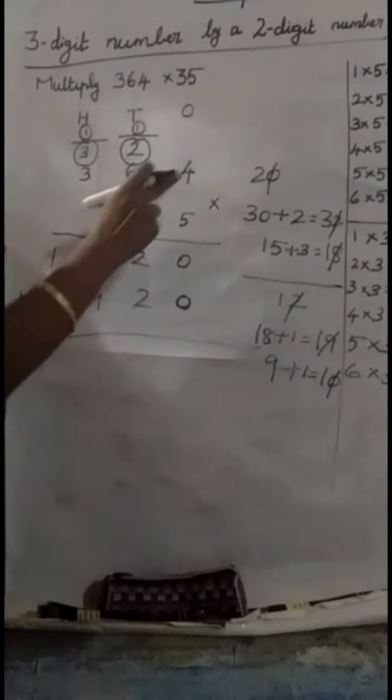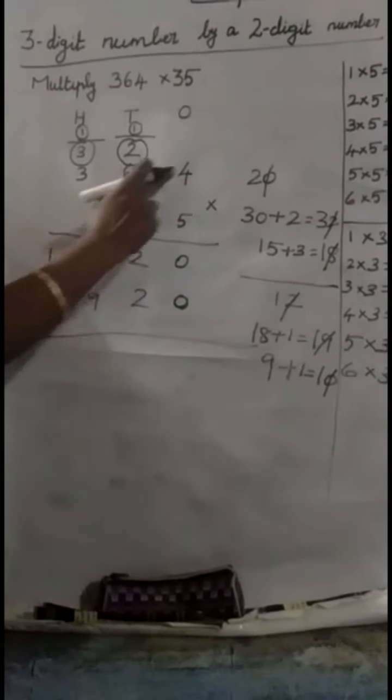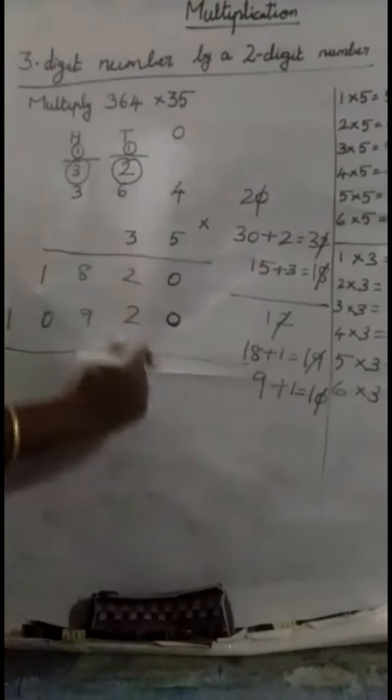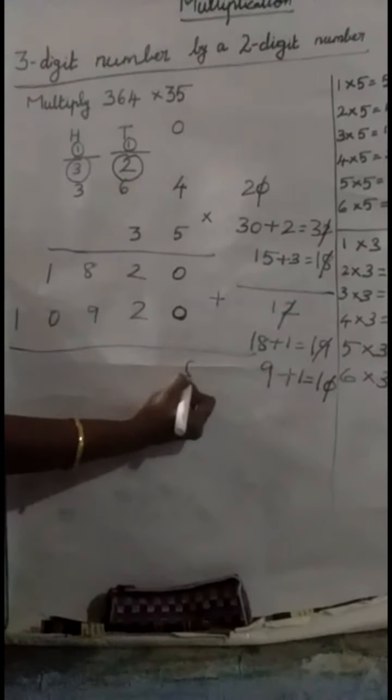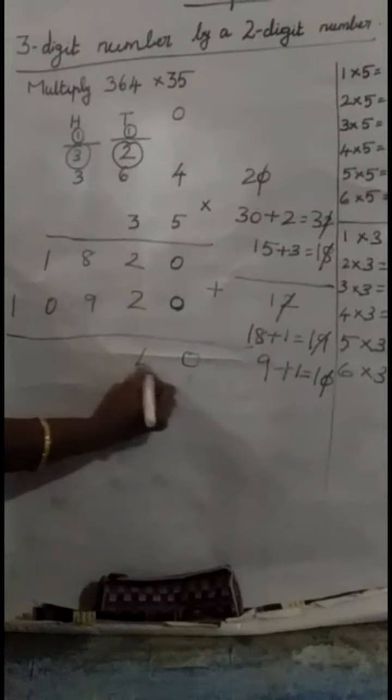Now, add. First, multiply by 5. And next, multiply by 3. At last, you have to add these 2 answers. Okay. 0 plus 0. 0. 2 plus 2. 4.